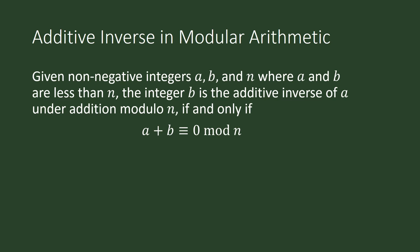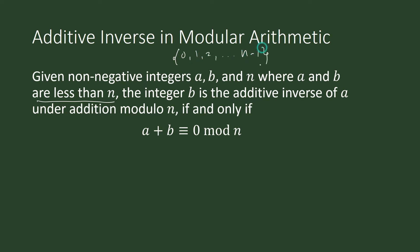Pay attention to our restrictions on a and b: a and b are less than n. So a and b can be any of these elements: 0, 1, 2, up to n minus 1. This is our restriction for our definition of additive inverse.